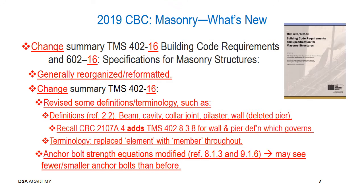Regarding the anchor bolt strength equations, those have been modified in sections 8.1.3 and 9.1.6 of TMS 402-16, and are largely of interest to design professionals. However, as a result of the nature of those equations, what you may see as an inspector is fewer or smaller anchor bolts than previously, because based upon research, the previous equations were found to be too conservative. The new equations recognize improved accuracy, so you may see fewer anchor bolts accordingly.